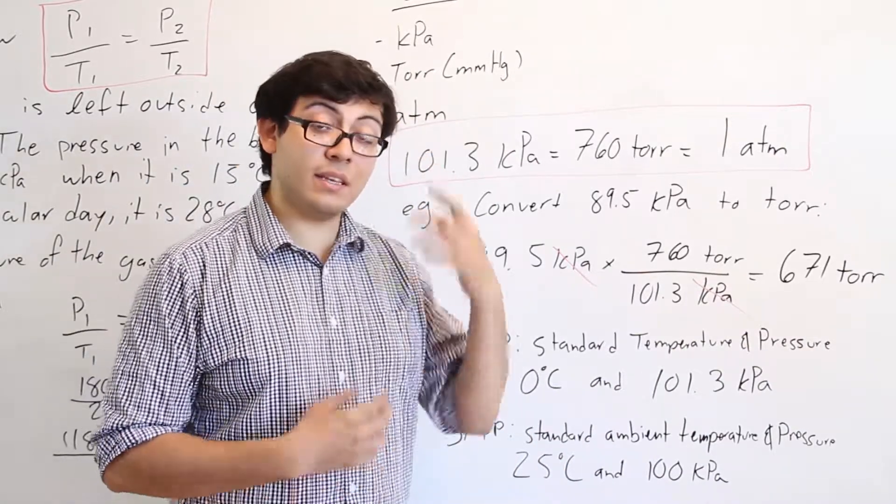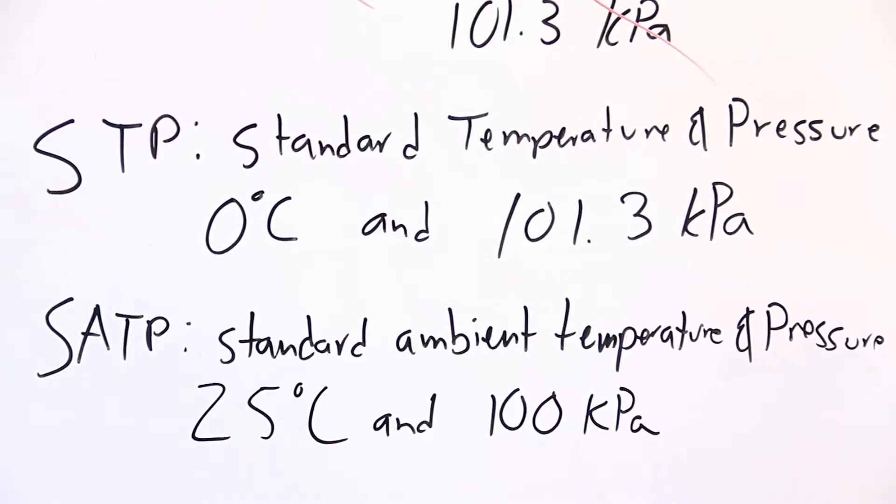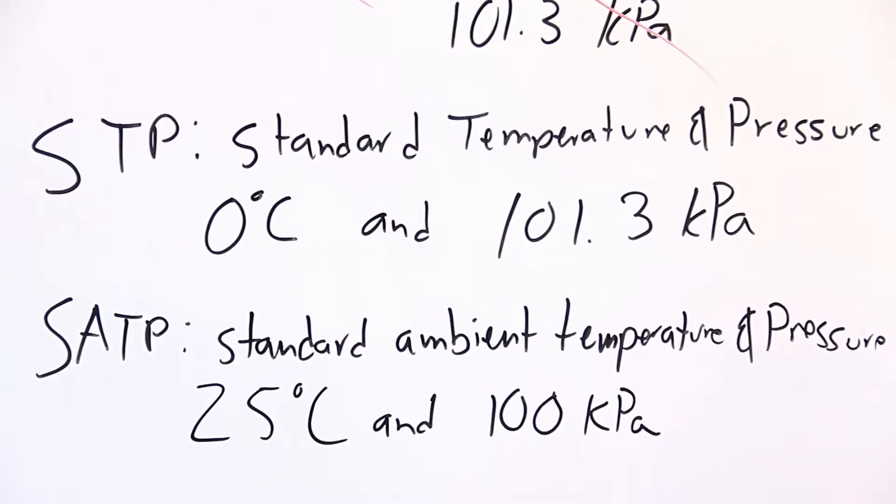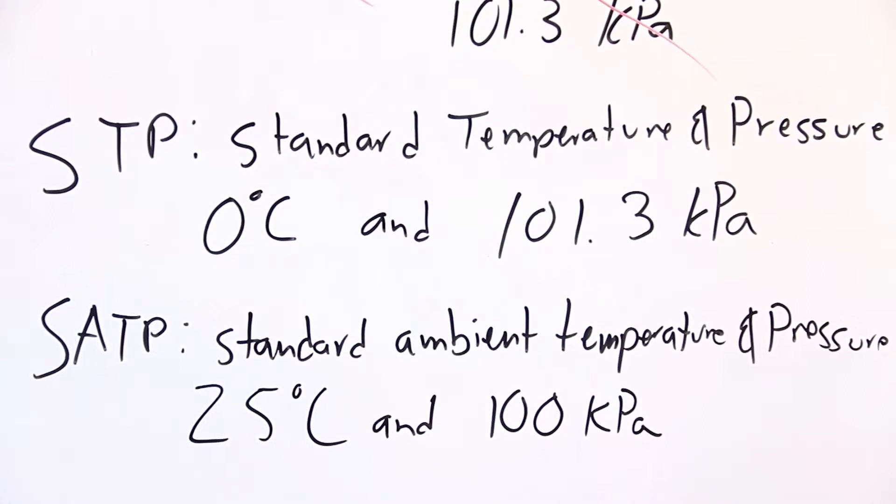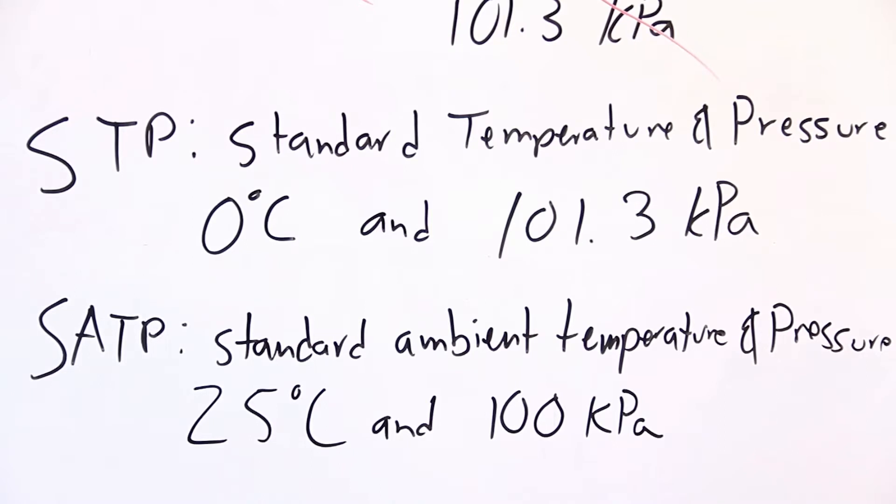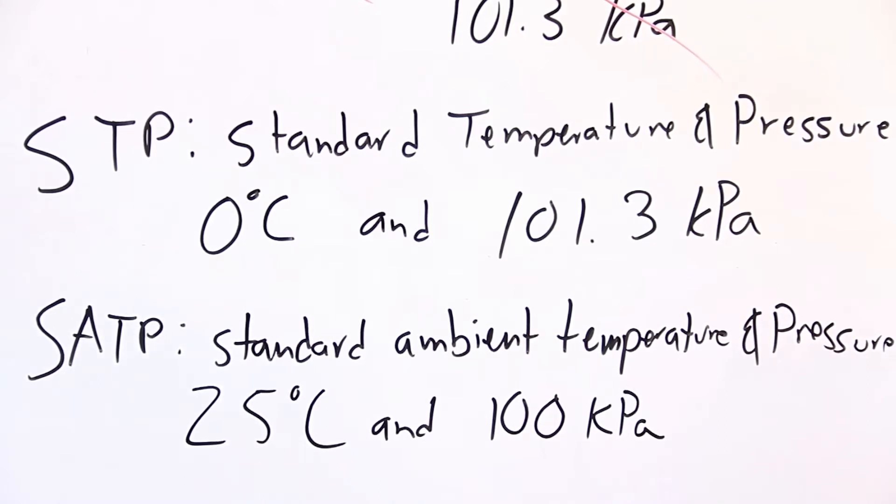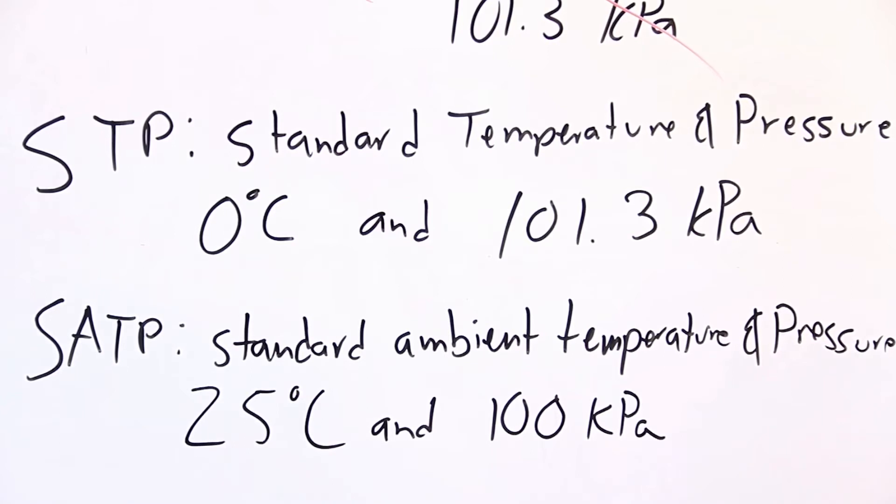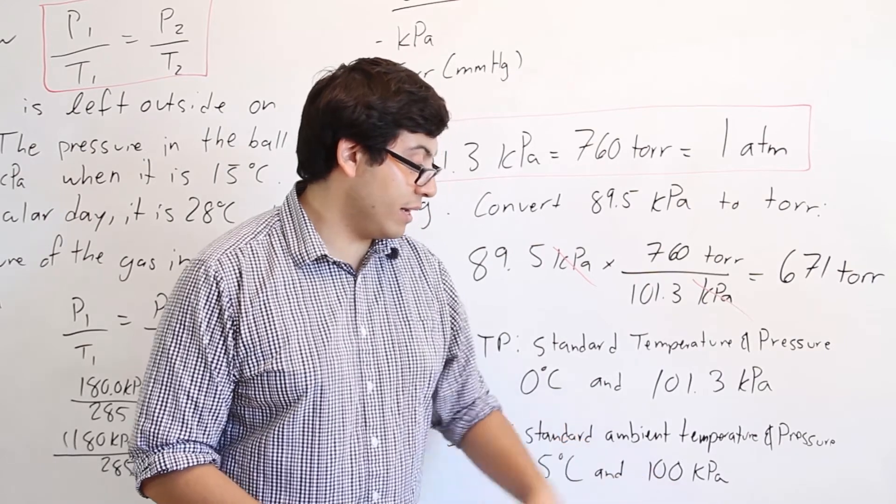Two things to keep in mind, a lot of these gas questions will be stated in STP or SATP. So STP just stands for Standard Temperature and Pressure, which means you're working with 0 degrees Celsius and 101.3 kilopascals of pressure. SATP means Standard Ambient Temperature and Pressure, so it's what's around us right now. So room temperature is typically 25 degrees Celsius, and a comfortable pressure for us to live in is 100 kilopascals.